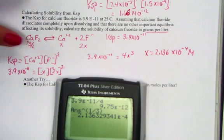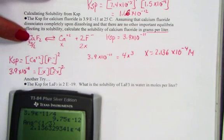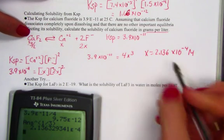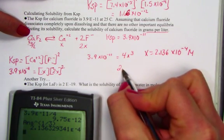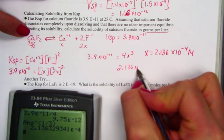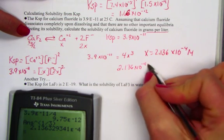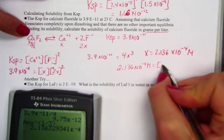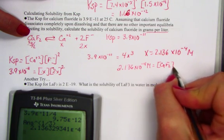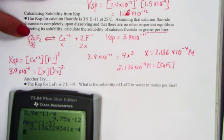However, since the ratio here of the salt also is 1 to 1, what this number is also telling us is 2.136 times 10 to the negative 4th molarity units is the calcium fluoride concentration in molarity units.